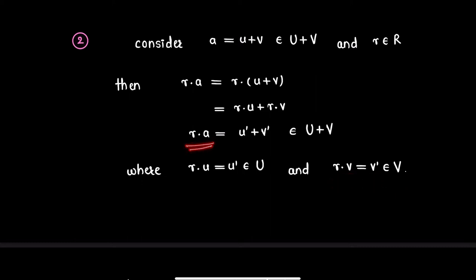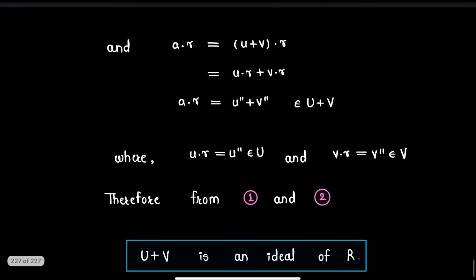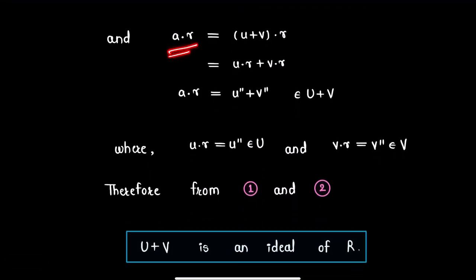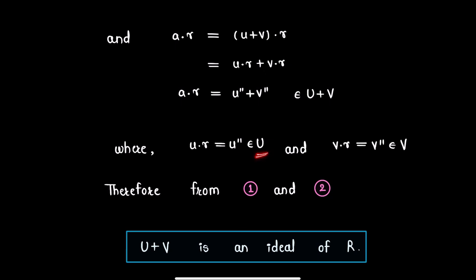Therefore r·a is an element of set U plus V. Also, a·r equals (u plus v)·r, which equals u·r plus v·r. Therefore a·r equals u'' plus v'', where u'' = u·r is an element from ideal U and v'' = v·r is an element from ideal V. Therefore a·r is an element of set U plus V.